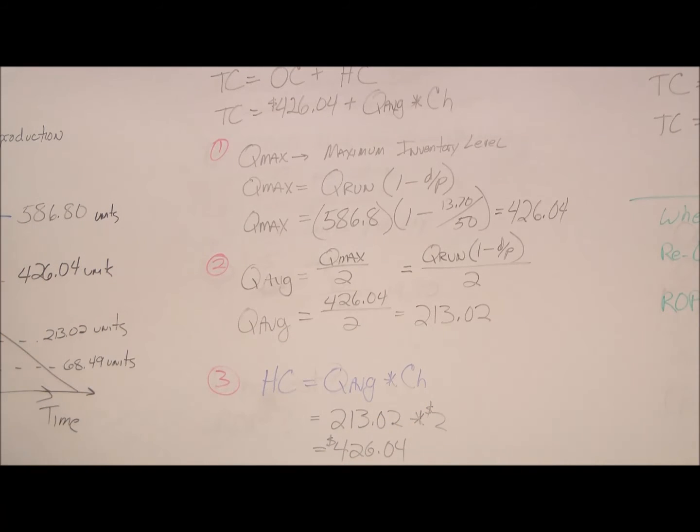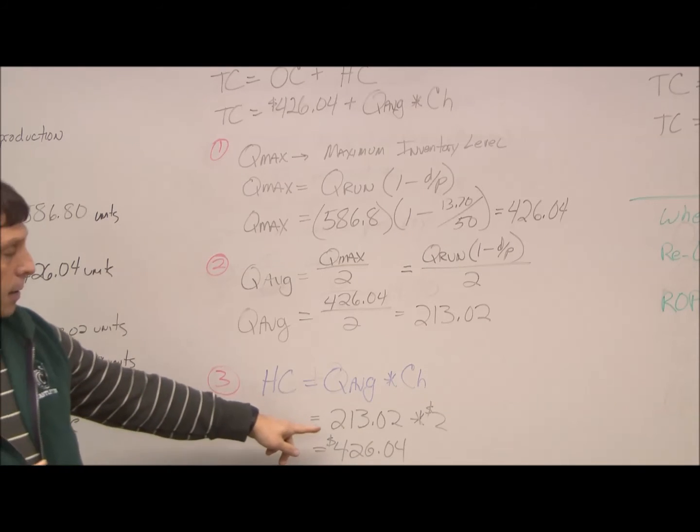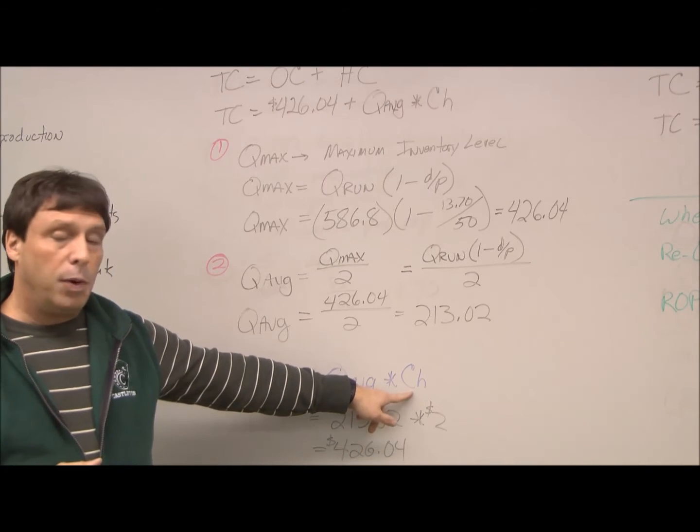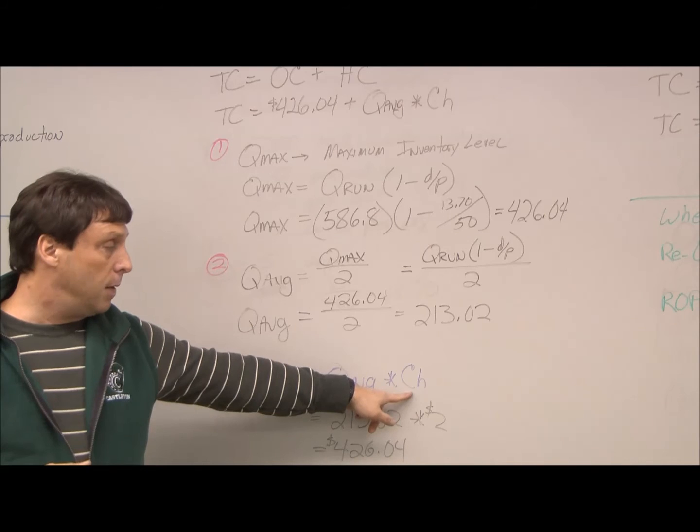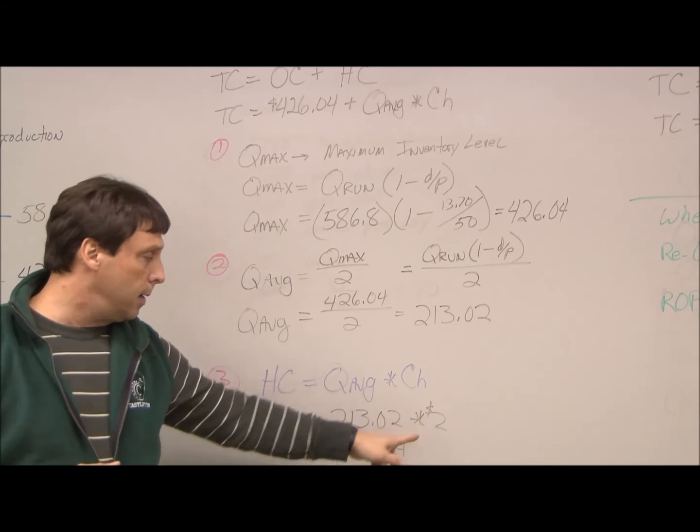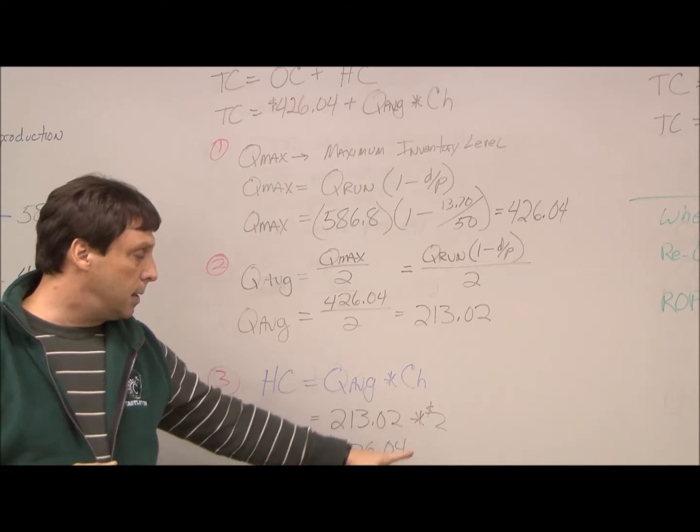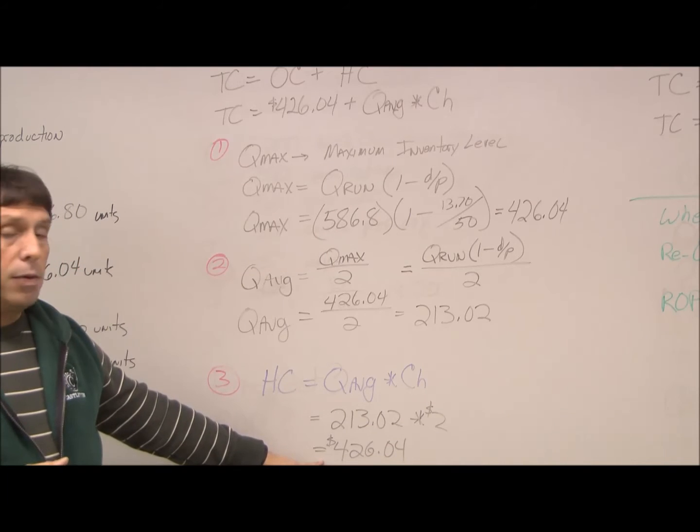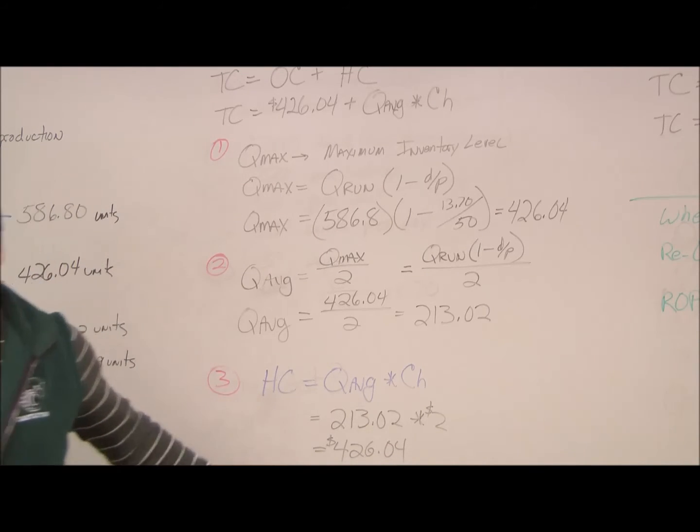Once we have that information, we can calculate our holding costs. We just take the 213. We were given the per unit inventory holding charge of $2. So 213 times 2 is $426.04.